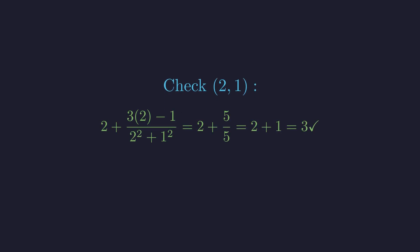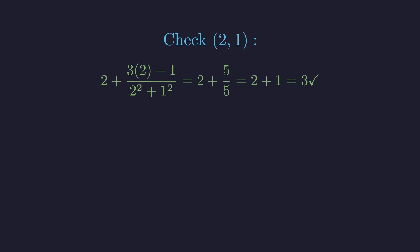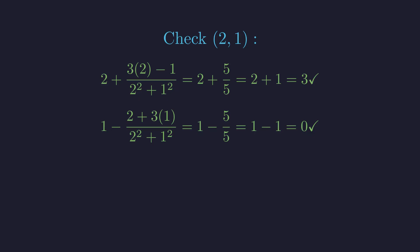Let's verify these solutions in the original equations. Checking x equals 2, y equals 1 in the first equation: 2 plus the quantity 6 minus 1 over 5 equals 2 plus 1 equals 3. Check. Second equation: 1 minus the quantity 2 plus 3 over 5 equals 1 minus 1 equals 0. Check.